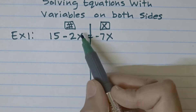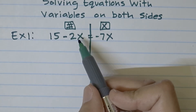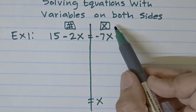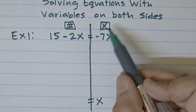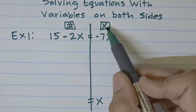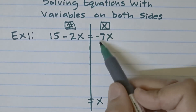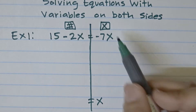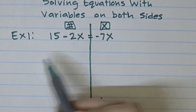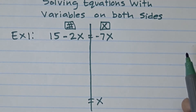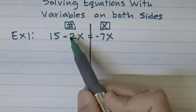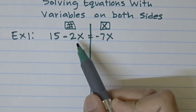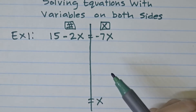So: 15 is a constant term — it's right where it should be. Negative 2x is a variable term, so it needs to go to the right side. Negative 7x is a variable term already on the right side. The only one not in the right place is negative 2x.